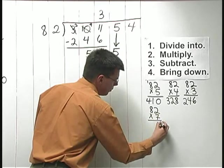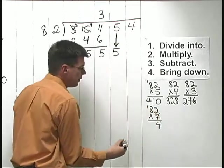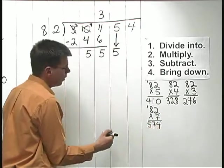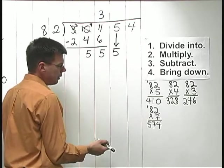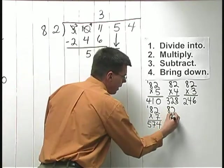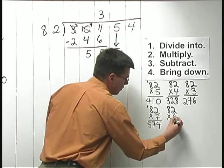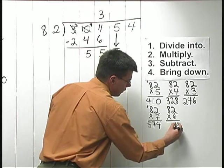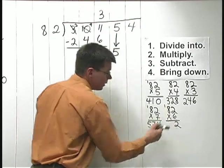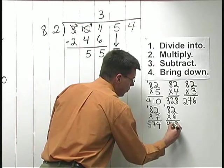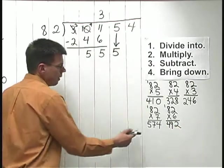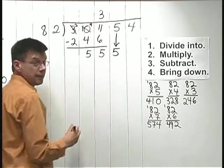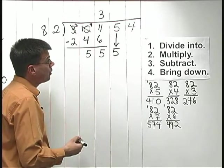82 times 7. 7 times 2 is 14. 7 times 8 is 56. Plus 1 is 574. Well, that's a little bit too big. So, I need to back up and try 82 times 6. 6 times 2 is going to be 12. Write the 2, carry the 1. 6 times 8 is 48. Plus 1 is 49. 7 times was too big. 6 times is giving me a number less than 555. So, I know 6 is it.